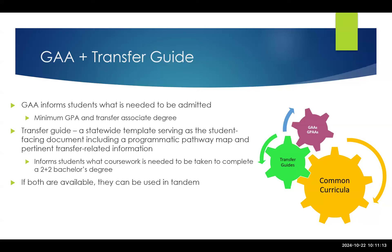With all of these agreement types, the purpose is the same — we want to communicate to students what they need to be admitted and guaranteed admission. If there is a guaranteed admission agreement and also a transfer guide, then that student has access to really all the information they need, not only to be admitted, but to follow a two-plus-two pathway. The GAA informs the student what is needed to be admitted — minimum GPA plus the transfer associate degree. With more competitive programs, there may be additional requirements like certain grades in certain courses. The transfer guide is a statewide template that serves as the student-facing document, including the curricular information and pertinent transfer-related information.